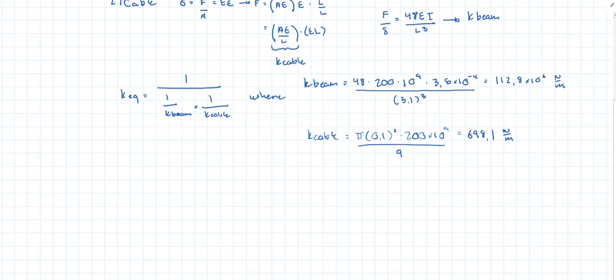Okay so finally the equivalent stiffness is equal to 1 over 1 over 112.8 times 10 to the 6 newtons per meter plus 1 over 698.1 times 10 to the 6 newtons per meter. And so that'll give you 97.1 times 10 to the 6 newtons per meter.